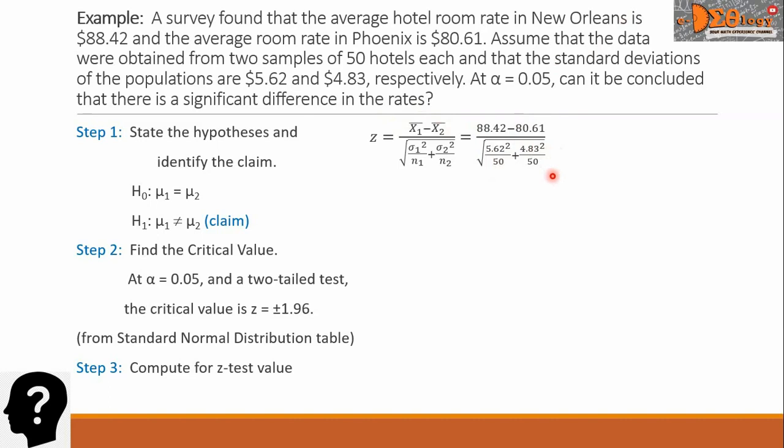Simplifying the numerator and denominator respectively, we have now 7.81, all over the square root of 1.098266.